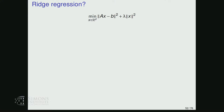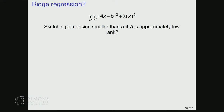Recall we started talking about ridge regression, where we add a λ‖x‖² regularization term to the objective. As pointed out, when λ is very large, this is an easy problem—we essentially don't care about eigenvalues and eigenvectors of A below √λ. In general, if A is approximately low rank relative to λ, we should do better.